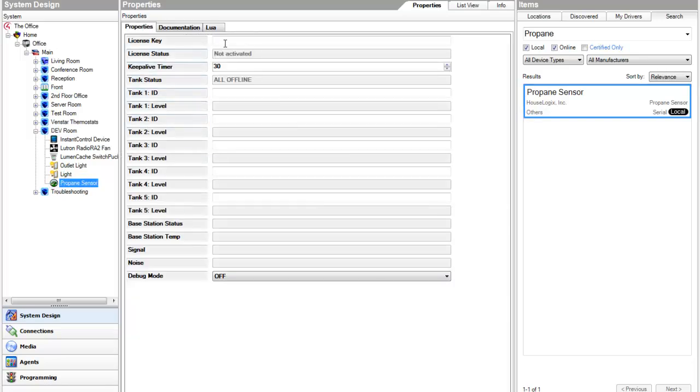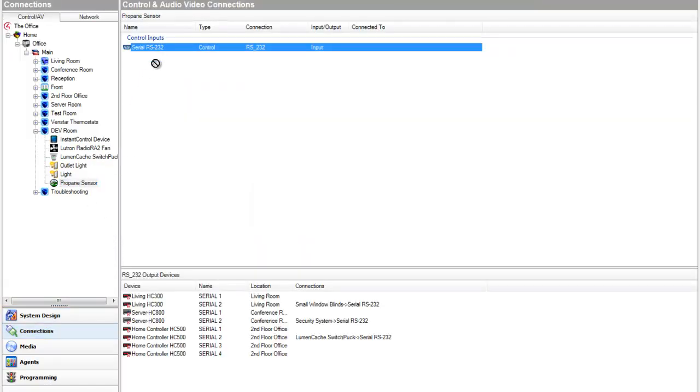After adding the driver to the project, enter your license key and click Set. Next, enter the five-digit ID number of the transmitter in the Tank-1 ID field. Up to five transmitters can be included in one driver.